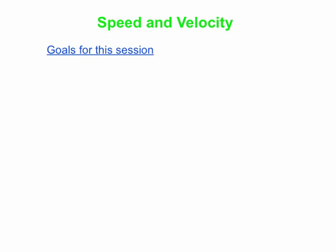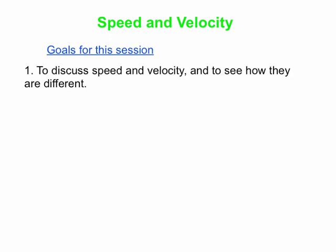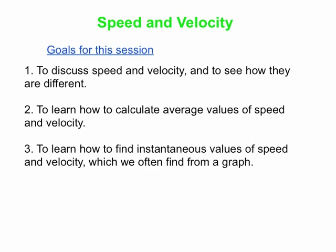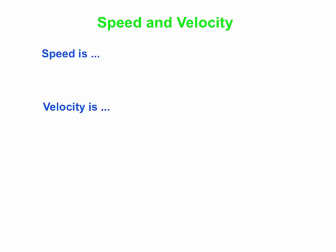In this session we're going to talk about speed and velocity. We have three goals: the first is to discuss speed and velocity and see how they're different; our second goal is to talk about average values and how to calculate average speed and average velocity; and thirdly we'll learn about how to find instantaneous values of speed and velocity, and one way we're going to do that is to investigate graphs.